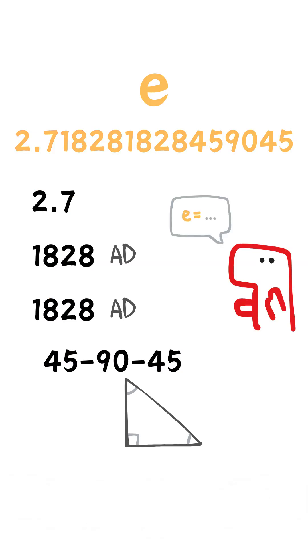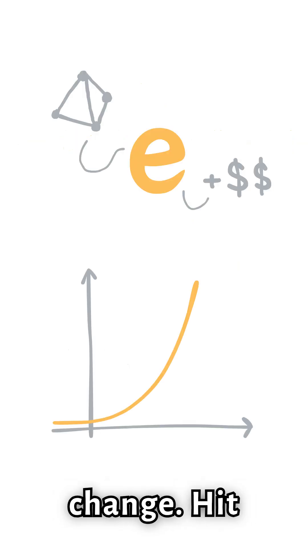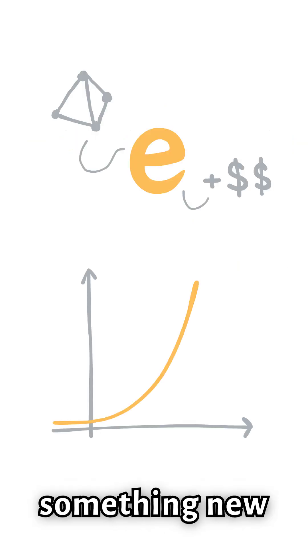From physics to finance, e is the secret ingredient behind exponential change. Hit the like button if you learned something new and subscribe for more.